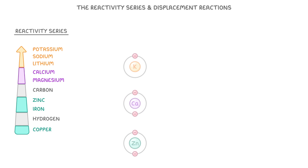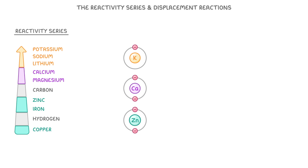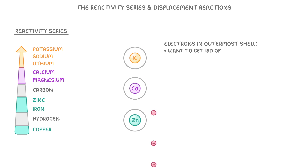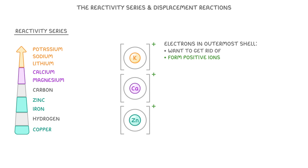If you remember the electron arrangement of metals, what they all have in common is that they have electrons in their outermost shell that they want to get rid of. And so when they react with other substances, they get rid of these outer shell electrons and form positive ions. So when we talk about the reactivity of a metal, all we mean is how easily it forms these positive ions.